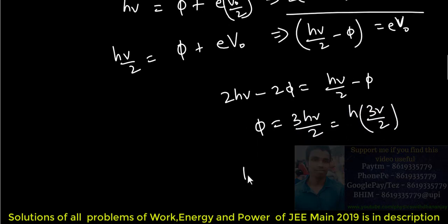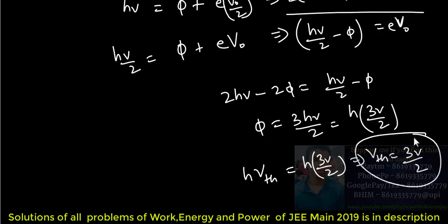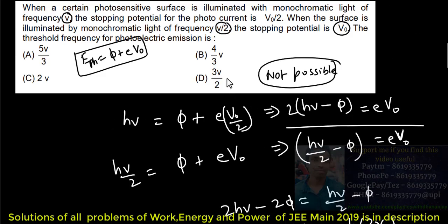Work function is h times the threshold frequency. The work function equals h times 3 mu by 2, so the threshold frequency is 3 mu by 2. And 3 mu by 2 is one of the options, so you might be tempted to mark it.